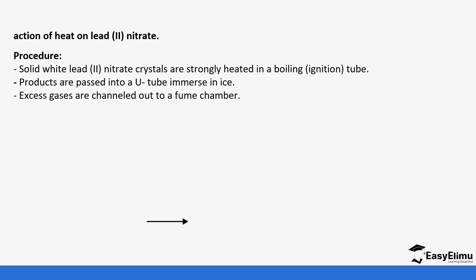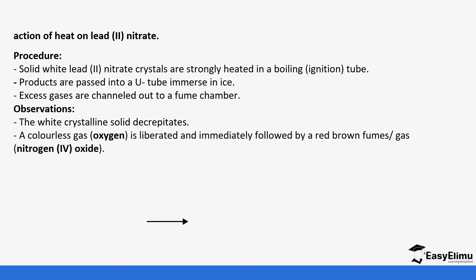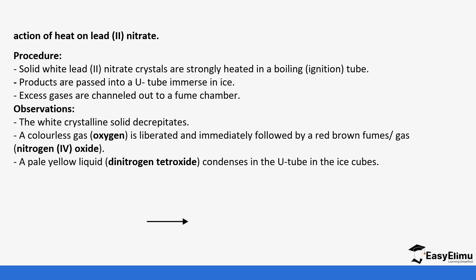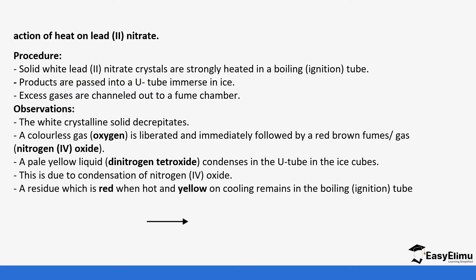As an example, when lead nitrate crystals are heated in a boiling tube and the products are passed through a test tube immersed in ice water, excess gases are expelled through a fume chamber. You'll notice the white crystalline solid decrepitates — meaning you hear a cracking sound — then a colorless gas is liberated followed by red-brown fumes of nitrogen dioxide. A pale yellow liquid forms in the test tube containing ice because the nitrogen dioxide condenses to form nitrogen tetraoxide (N₂O₄).